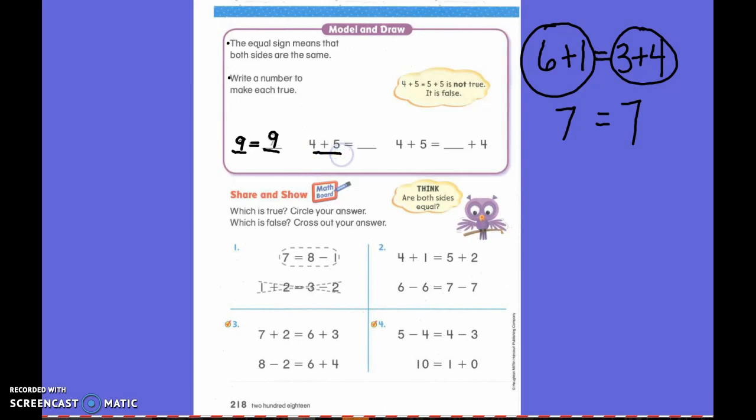4 plus 5 equals 9. We just stated that 4 plus 5 equals 9. So now we need to figure out 4 plus what equals 9. You're right, it is 5. 5 plus 4 equals 9. We cannot put 9 here because 4 plus 5 equals 9, but 9 plus 4 does not equal 9. So my answer has to be 5.